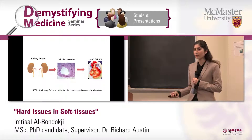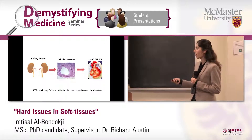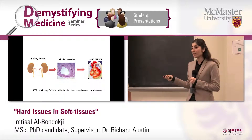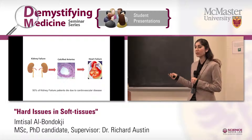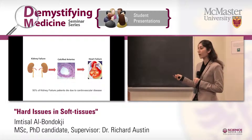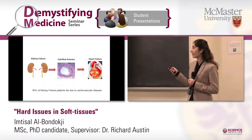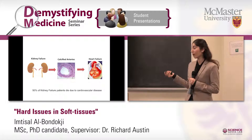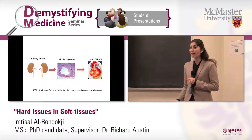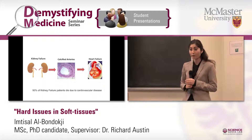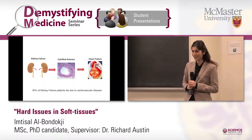So what happens in kidney failure? One of the common occurrences is calcification, and when blood flow is impaired, that puts an increased burden on the heart, making the heart work twice as hard and leading to cardiac failure. These patients are at a very increased risk of dying from heart failure rather than from kidney failure. Thank you.